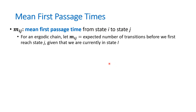m sub ij is called the mean first passage time from state i to state j, for an ergodic chain. Just like with steady states, we want to make sure it's an ergodic chain. Let m sub ij be the expected number of transitions before we first reach state j, given that we are currently in state i.